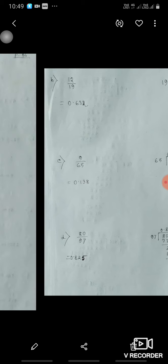Now 0.632, same way here also 9 upon 65 that is 0.138, only up to 3 decimal places we have to see. Now d part, 80 upon 97, that is 0.825.